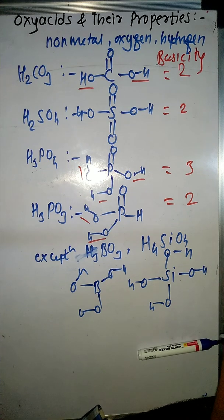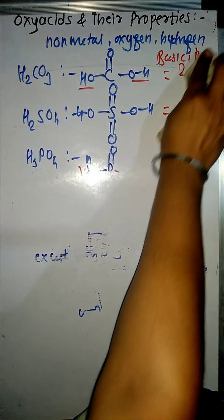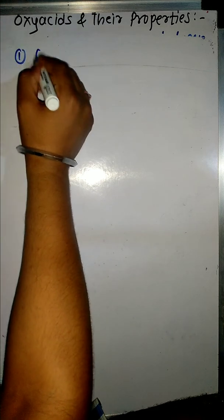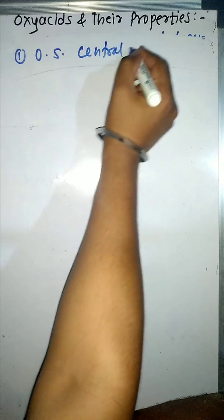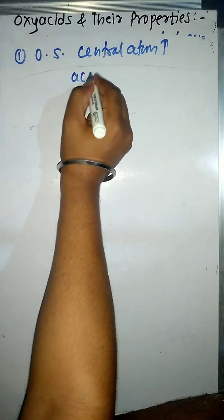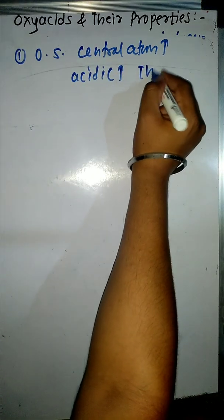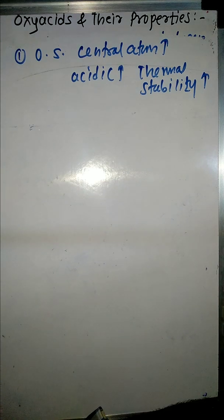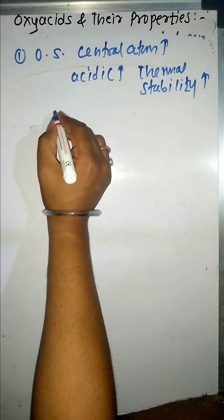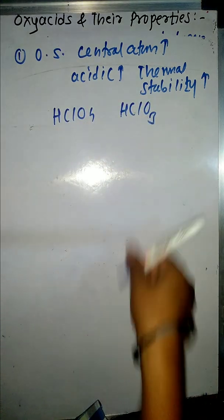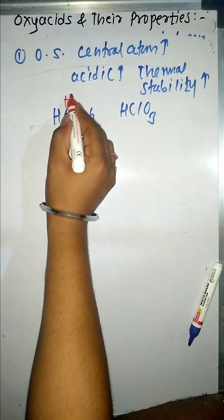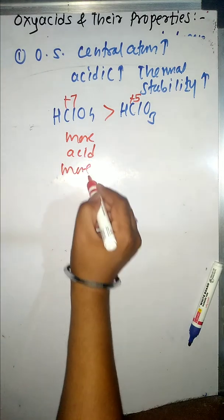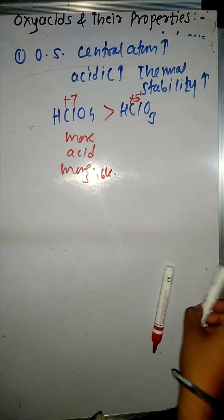Now let's focus on the properties of oxy acids. Property 1: If the oxidation state of the central atom in an oxy acid is more (higher), then we can say it is more acidic — its acidic character increases — and also its thermal stability increases. For example, comparing HClO4 and HClO3: the oxidation state of chlorine in HClO4 is +7, and in HClO3 it is +5. So HClO4 is more acidic as well as thermally more stable compared to HClO3.